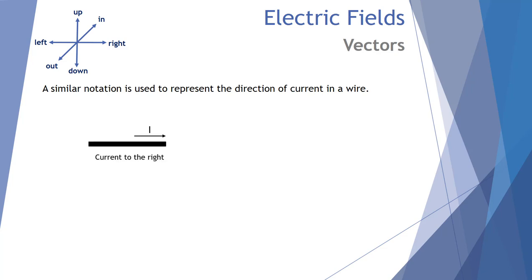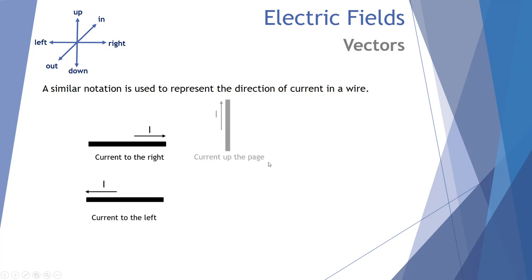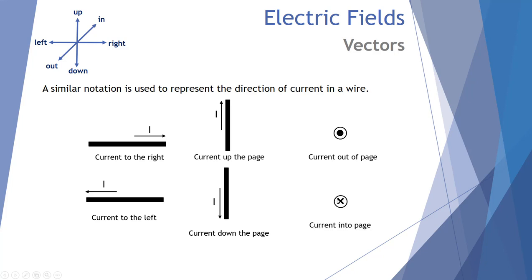The wire notation is the same. A wire with symbol I and an arrow shows current direction — right, left, up, or down the page. The wire is represented by a circle: a dot inside the circle means current is coming out of the screen towards you, like the front of an arrow. A cross inside the circle represents current going into the page — the arrow tail going away.